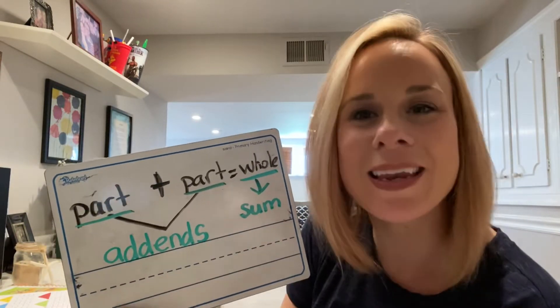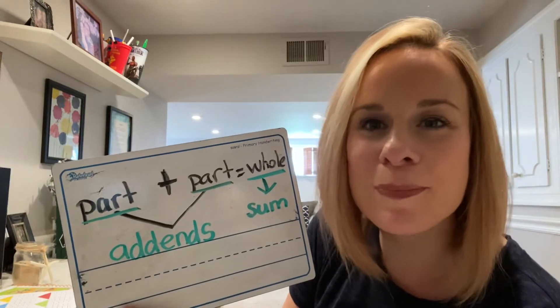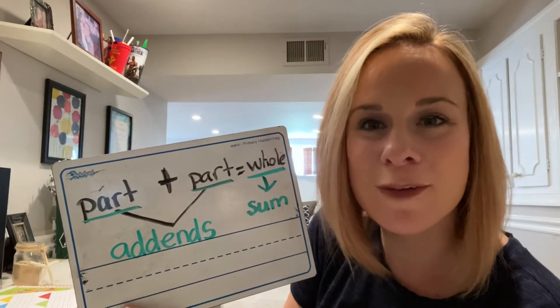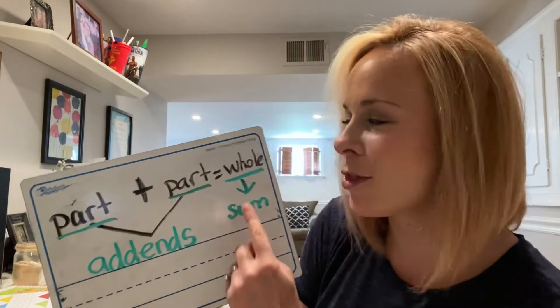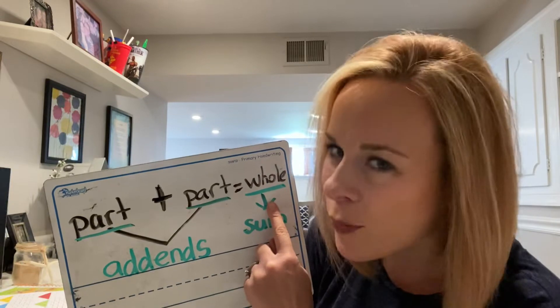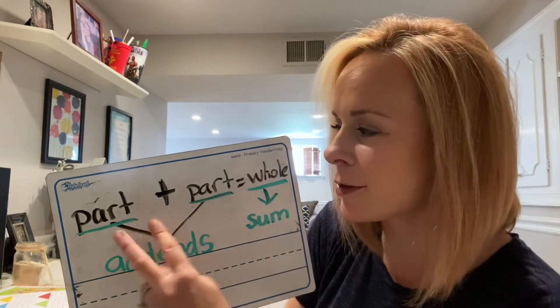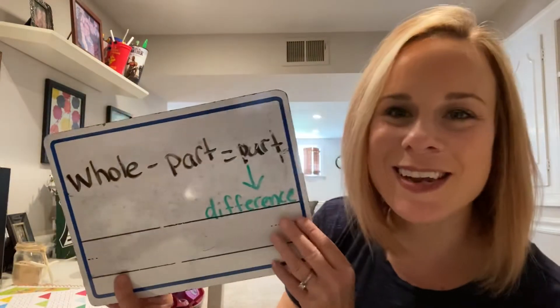Remember that in an addition sentence, the whole number is always going to be the biggest number. Keep that tip in mind as we do these fact family stories together — the whole number in an addition sentence is always going to be the biggest number, because those two smaller parts make up the whole.